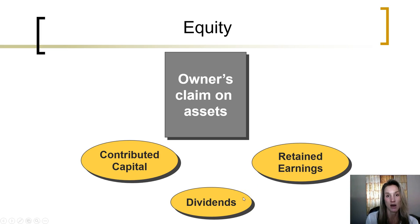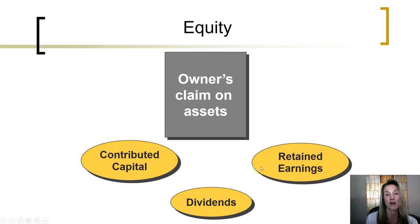Dividends will cause owner's equity to decrease. So the value of the company to owners — the amount of assets remaining after liabilities are paid — is impacted by how much owners have invested, the amount of profits or earnings that the company has retained, less any dividends or amounts of those profits that have been paid to owners.